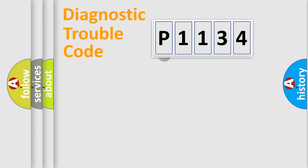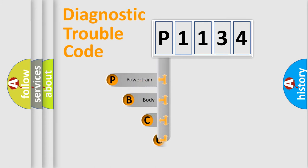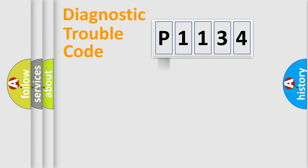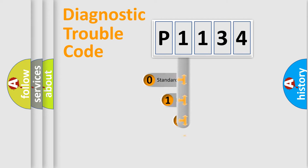Let's look at the history of diagnostic fault code composition according to the OBD2 protocol. We divide the electric system of an automobile into four basic units: Powertrain, Body, Chassis, and Network. This distribution is defined in the first character of the code.